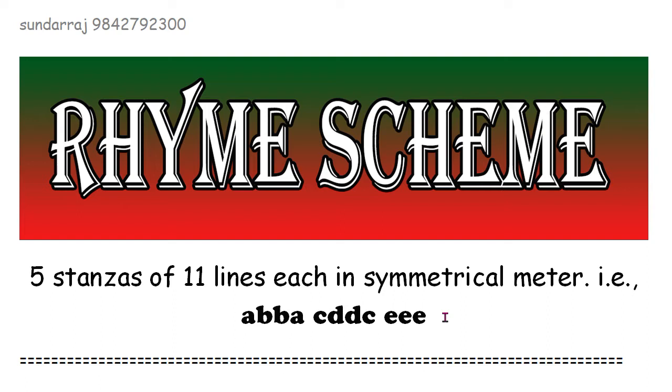The rhyme scheme is A, B, B, A, C, D, D, C, E, E, E. In this rhyme, you can see five stanzas of 11 lines.